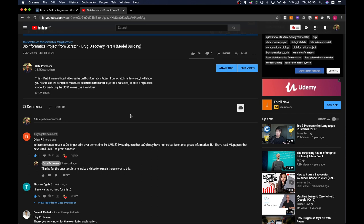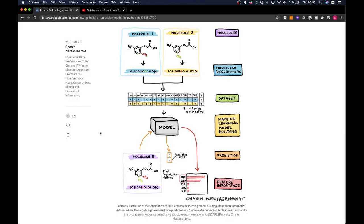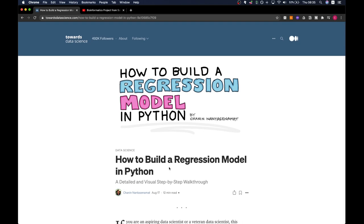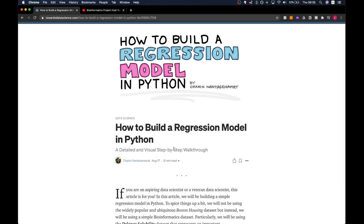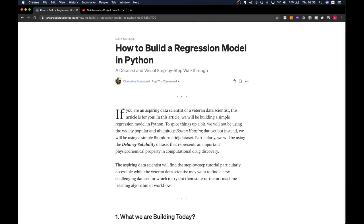About a month ago, I wrote an article in Towards Data Science. The article is called How to Build a Regression Model in Python, a detailed and visual step-by-step walkthrough. In this article, I used the Delaney solubility dataset. This dataset is essentially a dataset of compounds or small molecules with the reported solubility index.